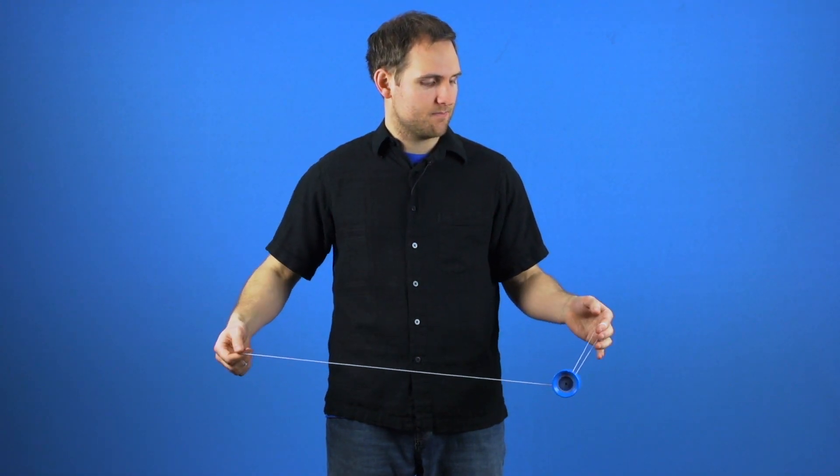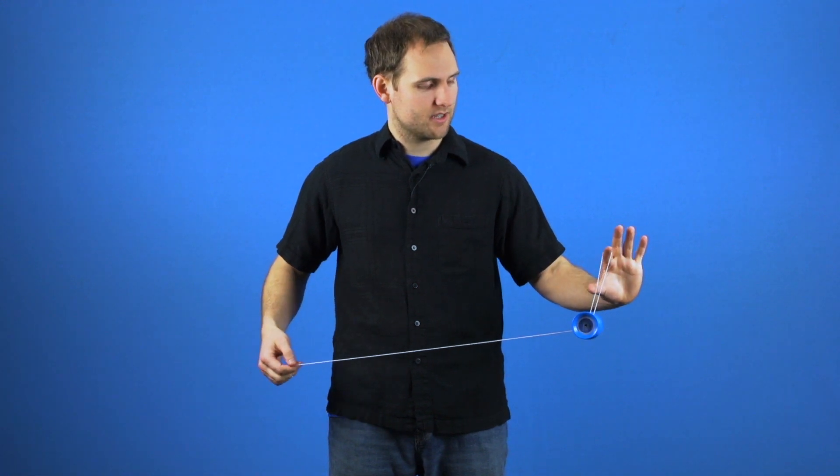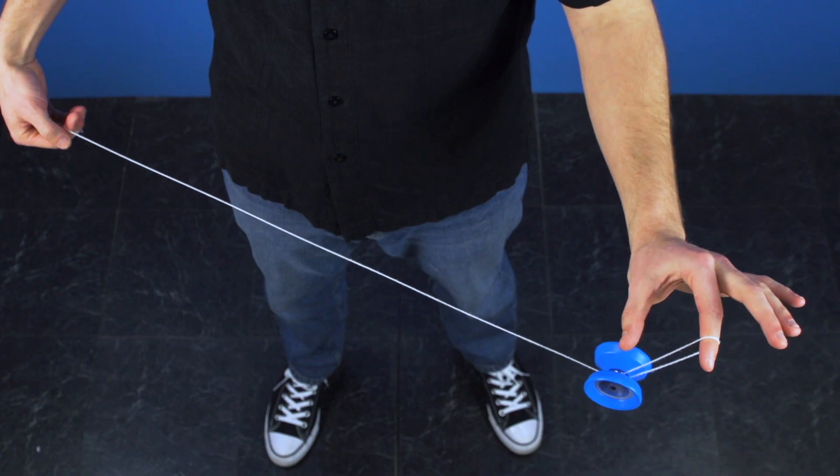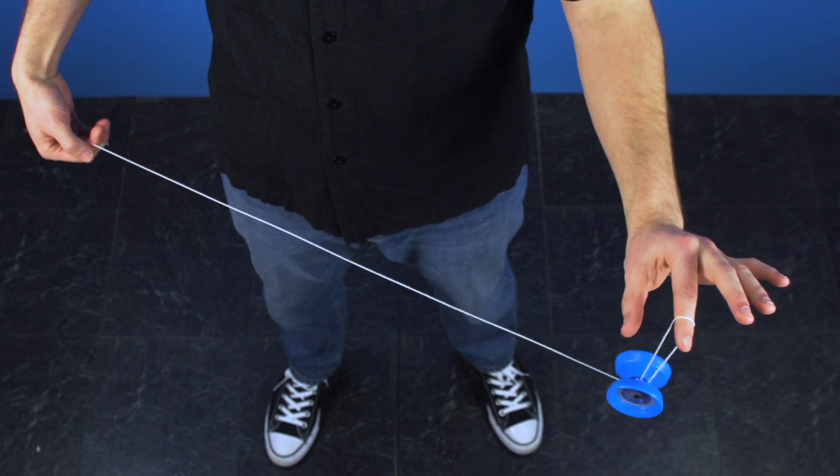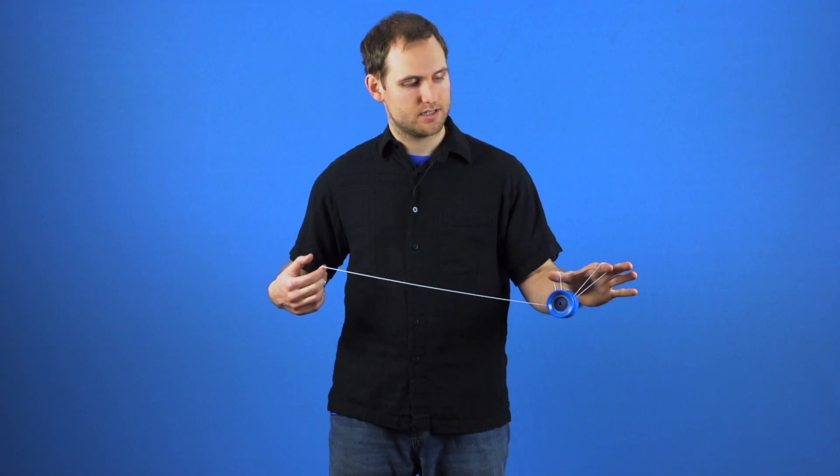To get into the basic chopstick mount you are going to start by throwing a trapeze. Then take your opposite thumb and put it over both of these strings and make this kind of C shape with your hand. Take your throw hand and pop the yoyo up over the thumb and land it in between just like this.